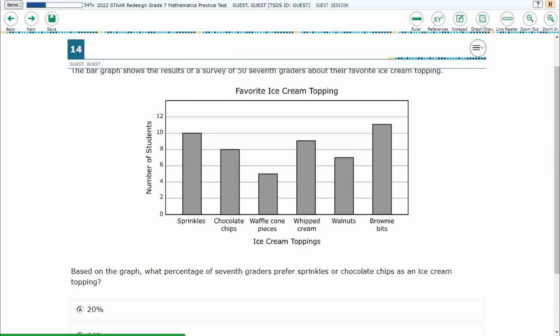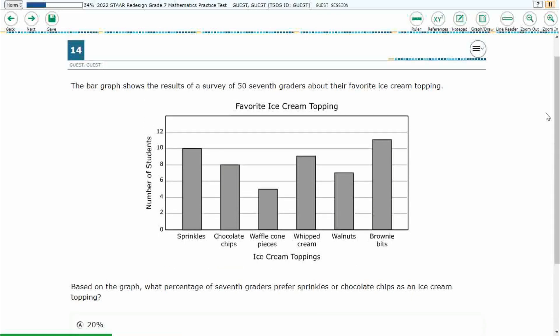So we've got a bar graph shows results of 50 seventh graders about their favorite ice cream topping. Based on the bar graph, what percentage of seventh graders prefer sprinkles or chocolate chips?